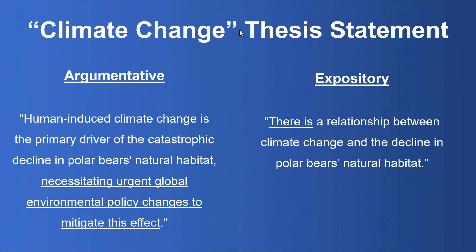Let's look at some examples using climate change as our topic. An argumentative essay will try to argue one position — for example: 'Human-induced climate change is the primary driver of the catastrophic decline in polar bears' natural habitat,' using emotive language like 'catastrophic' and an ought statement like 'necessitating urgent global environmental policy changes.' Whereas an expository essay simply says there is a relationship between climate change and the decline in polar bears' natural habitats, explaining that relationship clearly without inserting emotion or subjective ideas about what should happen. It uses 'is' statements, not 'ought' statements.